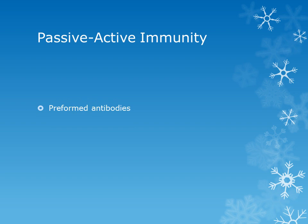In passive-active immunization, we give preformed antibodies and also a vaccine. The vaccine contains killed antigens or live attenuated antigens. A very important example is tetanus immunization, where we use both tetanus vaccine and preformed antibodies. Similarly, this approach is used for rabies — especially in dog bite cases seen in peripheral areas — and hepatitis.